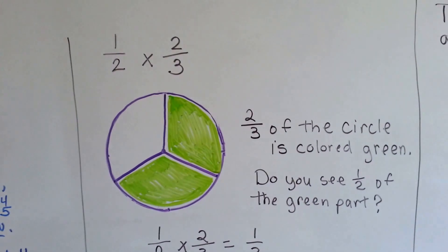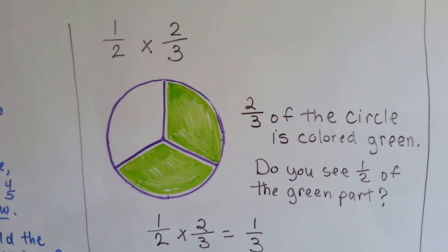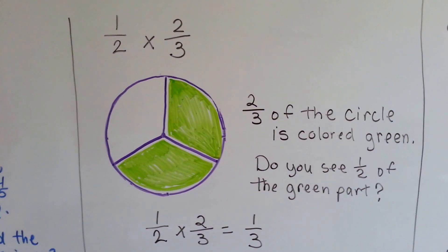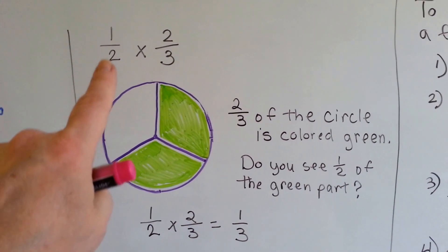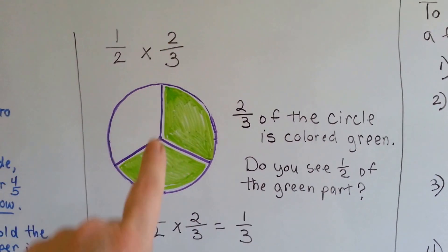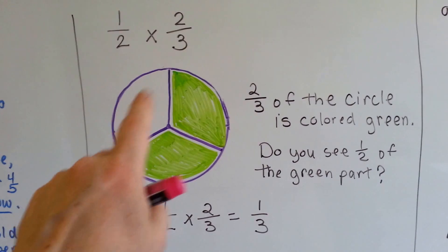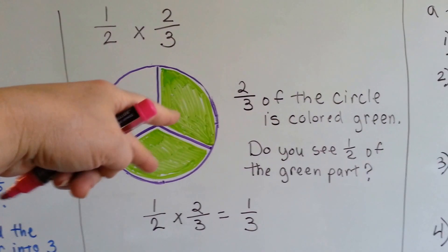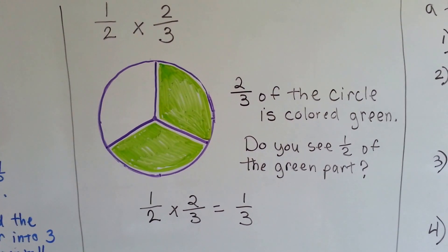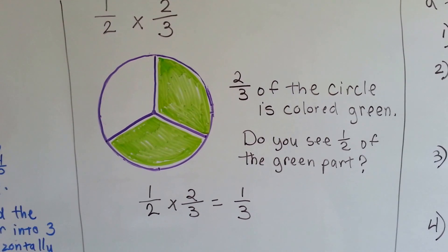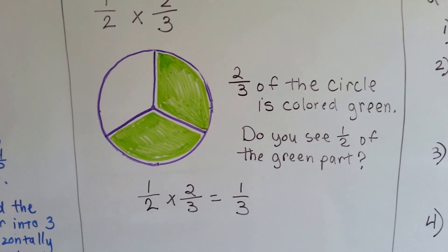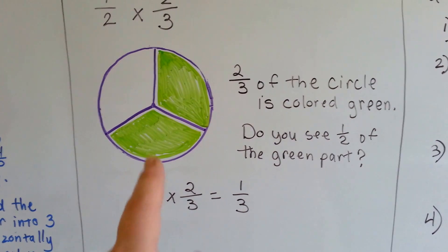Look at this one: 1 half of 2 thirds. This one's going to be really easy to see. If you wanted to multiply 1 half times 2 thirds, I made a circle and I split it into thirds. Then I colored 2 thirds of the circle green. And I need half of it. I need half of the green part. Do you see half the green part?